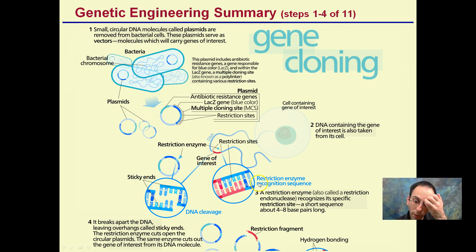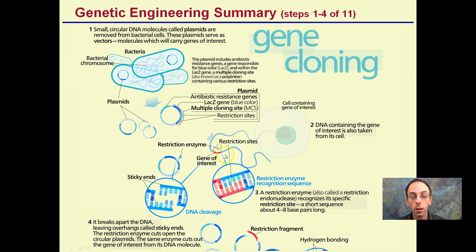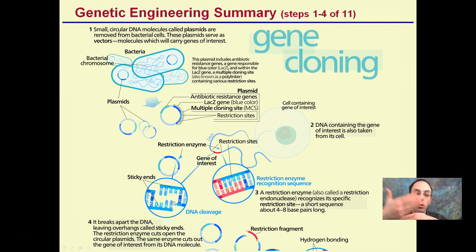Step three involves restriction enzymes that recognize a specific restriction site — a short sequence about four to eight bases long. This is the specific region, the restriction site, where the DNA is going to be cut. As you may remember from our restriction enzyme video, we cut the DNA and cause what are called sticky ends. These sticky ends are bases that don't have pairs — they want to pair up and join.